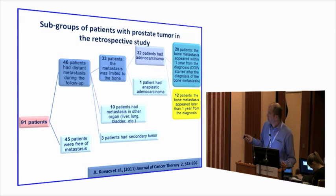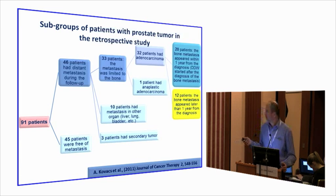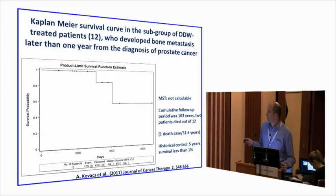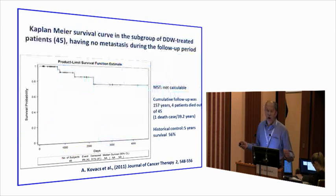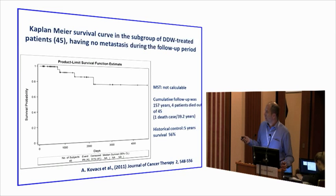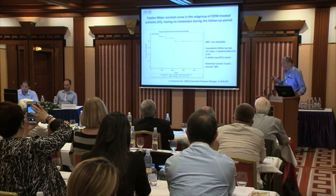For prostate cancer patients who were metastasis-free, we also could not calculate median survival time. Cumulative follow-up was 157 years; only four patients died — meaning we lost one patient every 39 years.